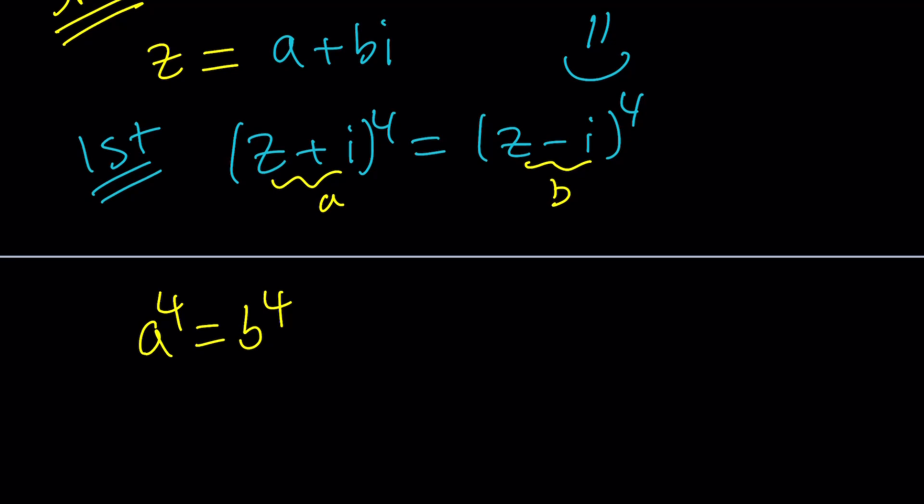A to the fourth equals B to the fourth. Mathematics are crazy because they can just simplify things like crazy, right? Of course, it doesn't mean the answer is going to be simple, but at least at the moment, we have a simpler equation. Now, how do you solve something like this?